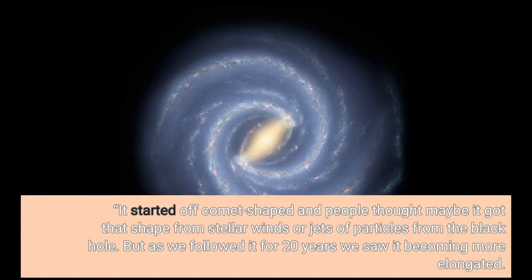It started off comet-shaped and people thought maybe it got that shape from stellar winds or jets of particles from the black hole. But as we followed it for 20 years we saw it becoming more elongated.